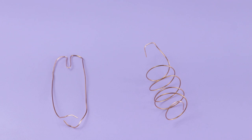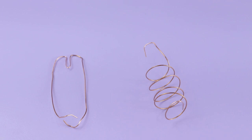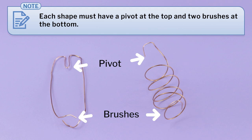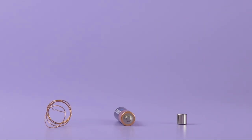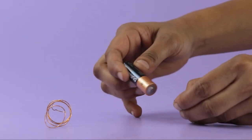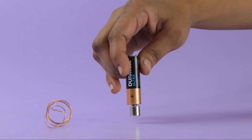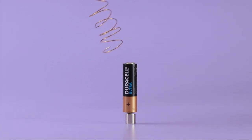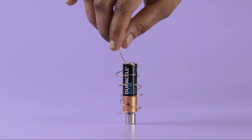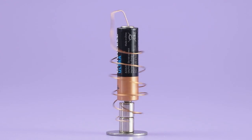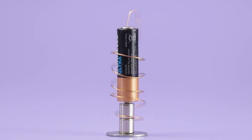Twist and wrap pieces of bare copper wire into different shapes with only two conditions: each shape must have a pivot at the top and two brushes at the bottom. Bring a 1.5 volt battery near a strong neodymium magnet and place the battery on the magnet. Balance the pivot of your copper coil on top of the battery and bring the brushes in contact with the neodymium magnet. Wow! The coil starts spinning! Isn't it interesting?